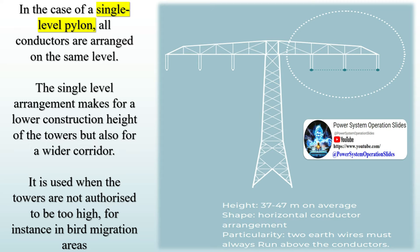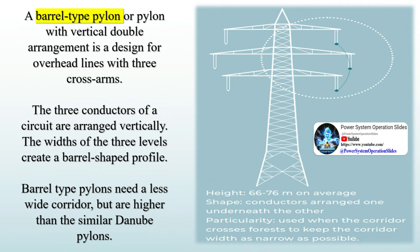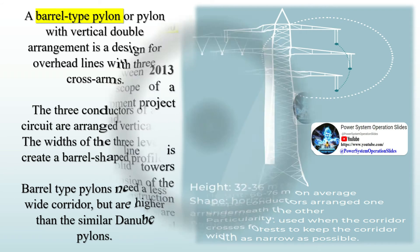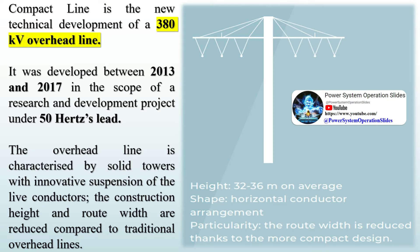The Danube or two-level pylon is a tower for two three-phase current circuits; the conductors are always arranged in a triangle, with two conductor bundles per circuit on the lower crossarm and one on the upper crossarm. In the case of a single-level pylon, all conductors are arranged on the same level. The single-level arrangement results in a lower construction height but a wider corridor, and is used when towers are not authorized to be too high, for instance in bird migration areas. A barrel-type pylon, or pylon with vertical double arrangement, is a design with three crossarms where the conductors are arranged vertically. Barrel-type pylons need a less wide corridor but are higher than similar Danube pylons. The compact line is a new technical development of a 380 kV overhead line developed between 2013 and 2017, characterized by solid towers with innovative suspension of live conductors, with reduced construction height and route width.